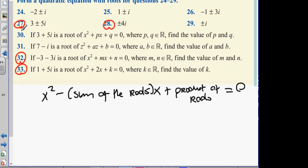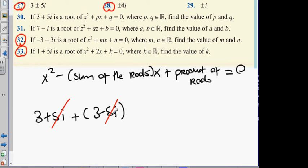So, for example, in question 27, the sum is 3 plus 5i, and then you add on 3 minus 5i. Now, what will always happen is, in all these equations, you'll never end up with an i-value. They always disappear. So, we're going to get 3 plus 3, which is 6. So, that's going to be a 6 in here.